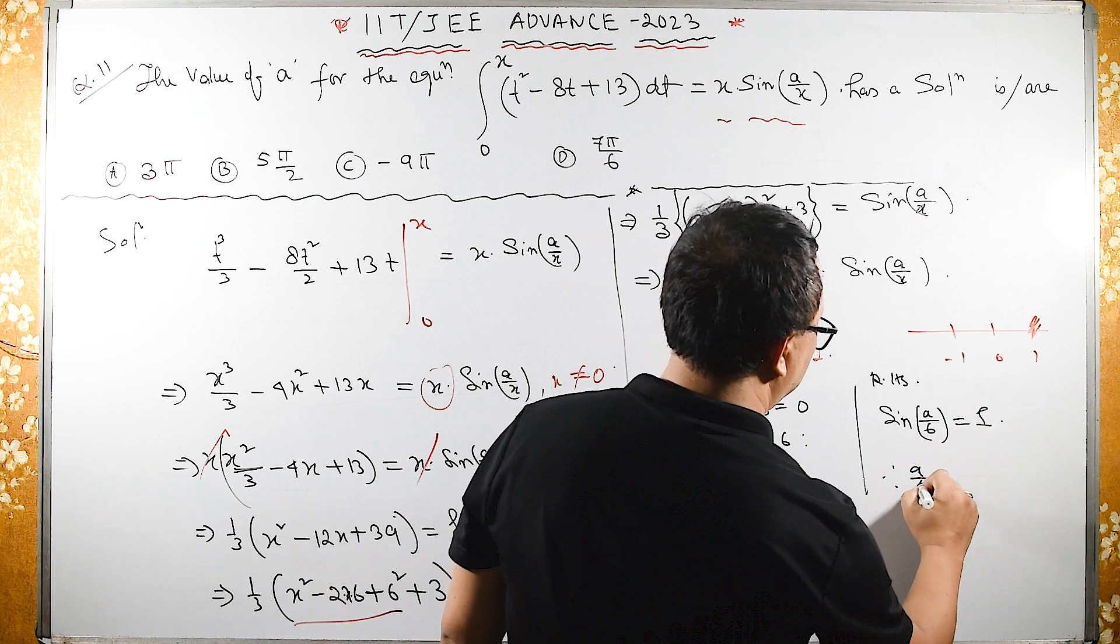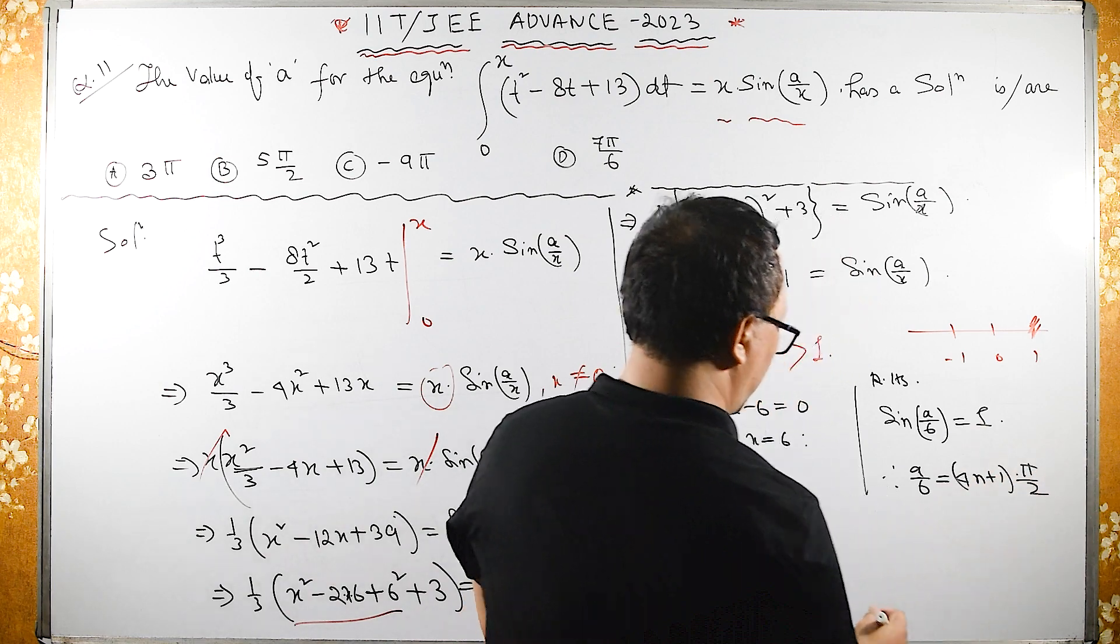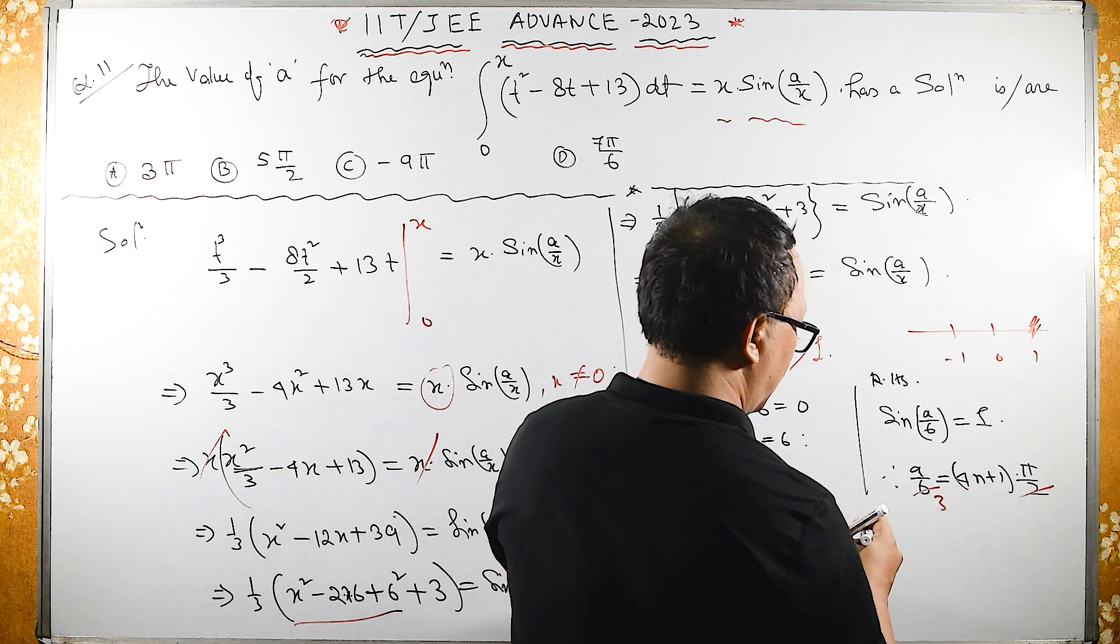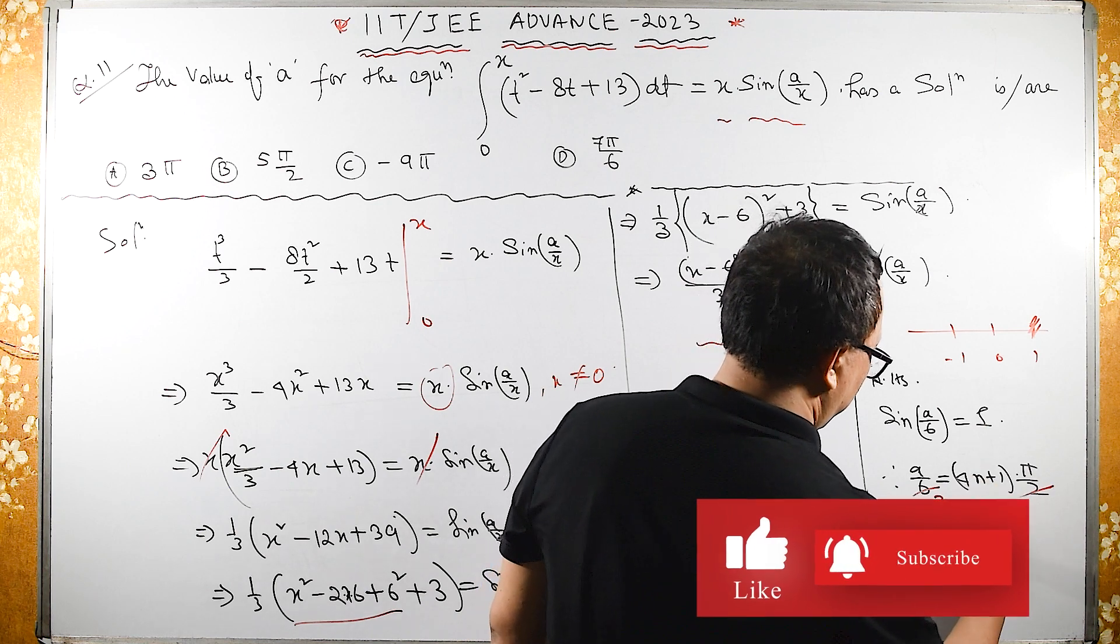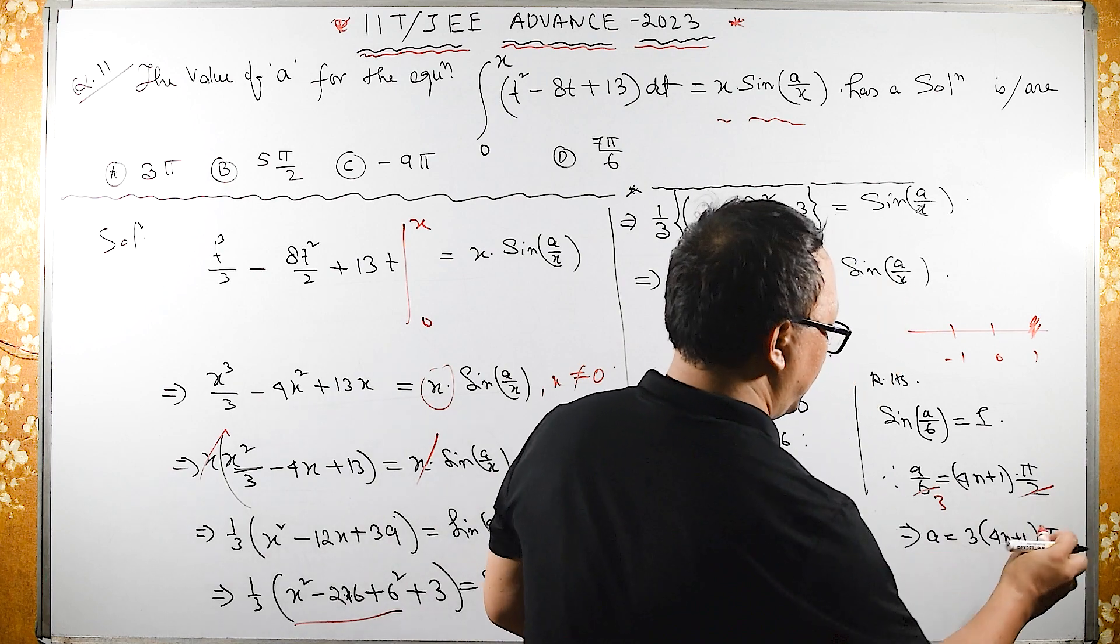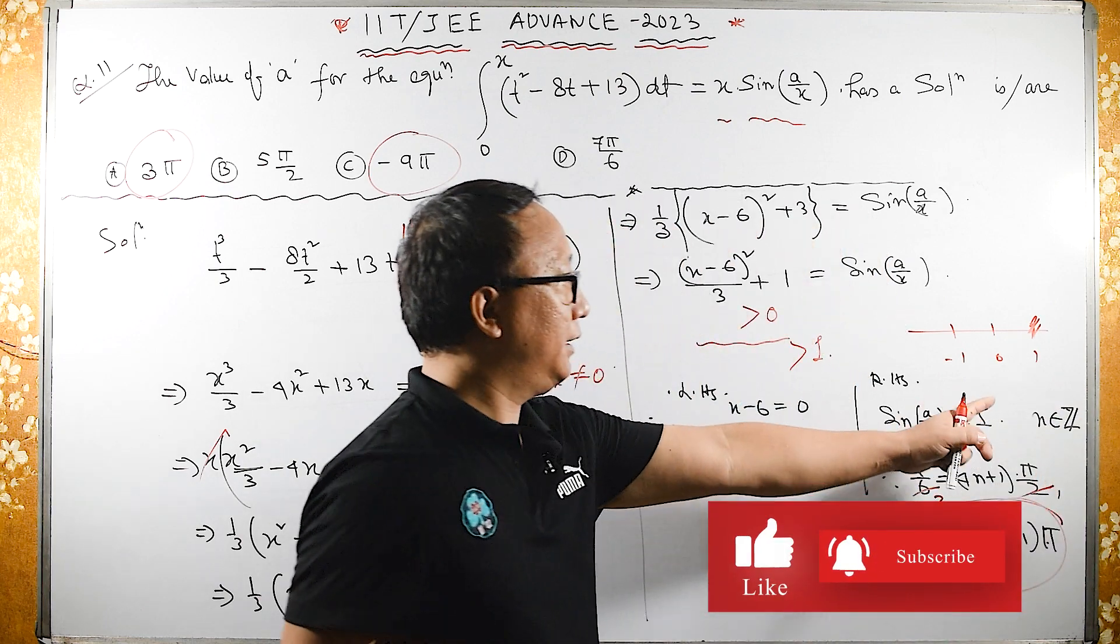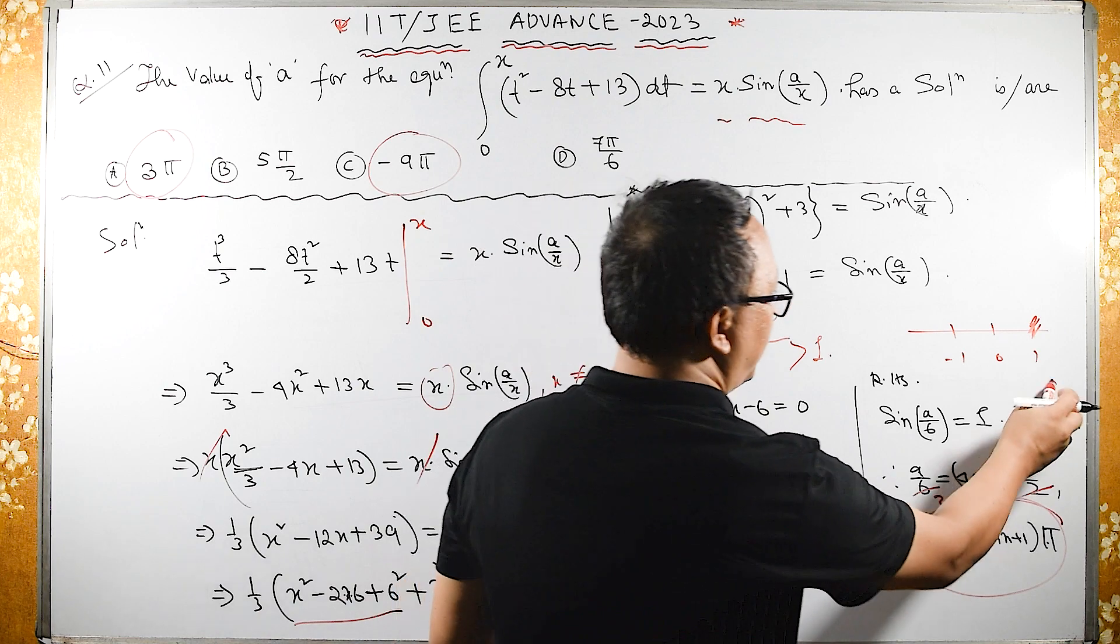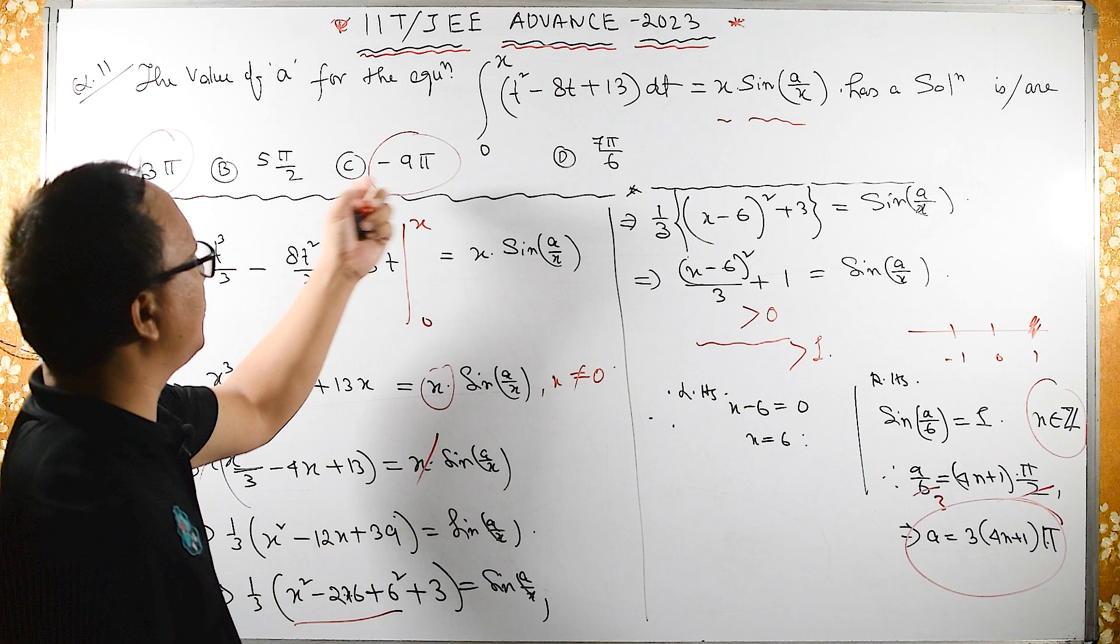Therefore A/6 equals (4N + 1)·π/2. If I cancel this 2, it becomes 3. Therefore it implies A equals 3(4N + 1)·π. For this N, N should be integer. It may be negative, positive, or zero. When N equals integer, the possibilities are these two; these two are fractions.